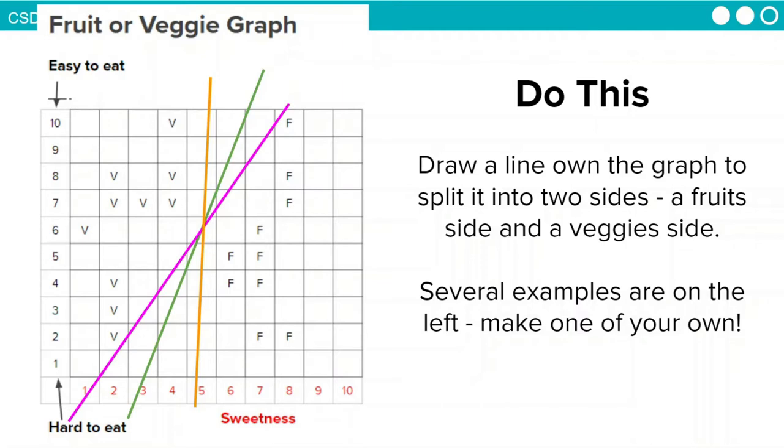So congratulations, we just created a model that we can use to help a computer make a decision. When a computer sees a new food, it will plot a new point on the graph and use that to decide whether it's a fruit or a vegetable. Let's see how our models do with some test foods.